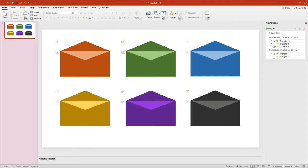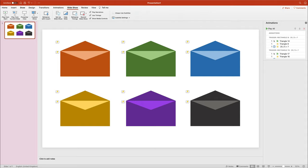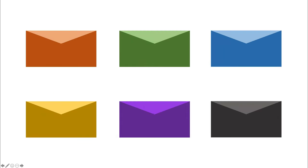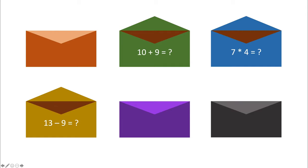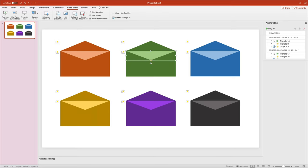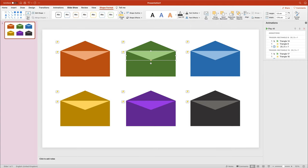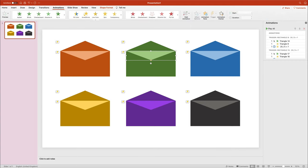I'm going to test it out now. Let's run the slideshow from the current slide. We have six envelopes and I click on them. The animation is working, the message is appearing on the envelope — but there's one problem: I did not change the inside triangle color, so it becomes orange for all envelopes. I want the color to match each envelope, so I go to the animation panel. We now have multiple animations, so we must be careful to select the correct one.